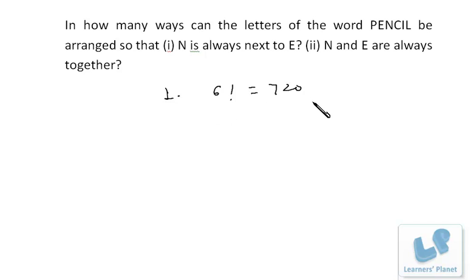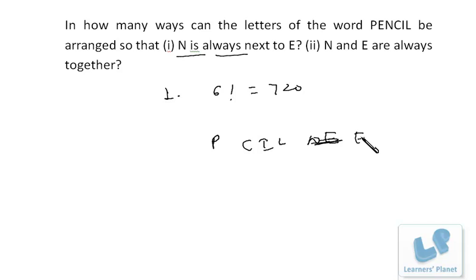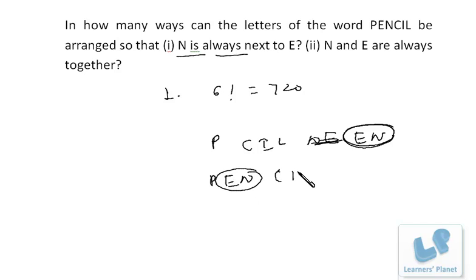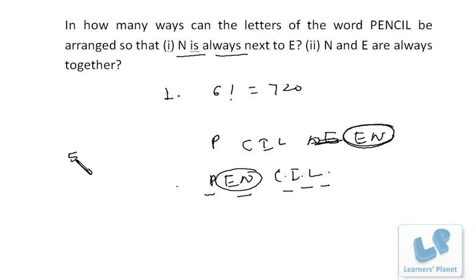The second condition is that N is always next to E — meaning the order must be E then N. We treat EN as a single unit. Now we have five objects and five places, so there are five factorial ways to arrange them. This single EN unit can be placed anywhere among the five positions, giving five factorial arrangements.